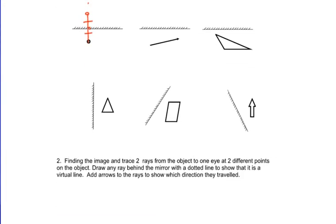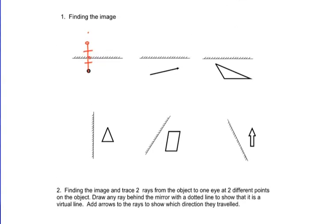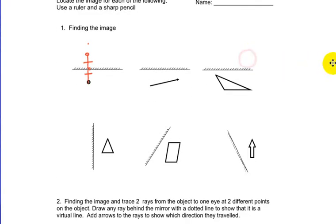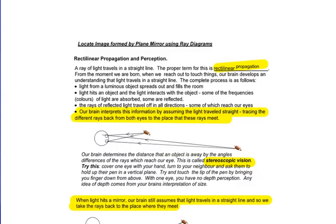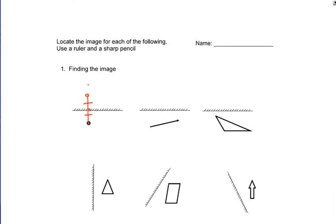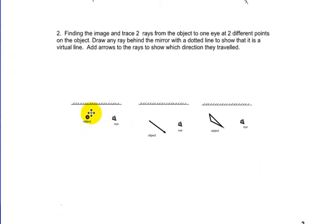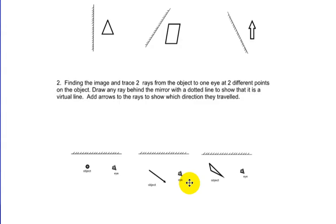Number two, find the image and trace two rays from the object to one eye at two different points on the object. Draw any ray behind the mirror at the dotted line to show that they are virtual. Add arrows. So the steps to success there that we looked at back here, I'd like you to apply these steps to success to this part here. So maybe make two, one on each side of the object, one on each side of the arrow, at least maybe two on this one, maybe even three would be better. Draw the image like we did in question number one here, but then draw how the rays, in fact, see the object.